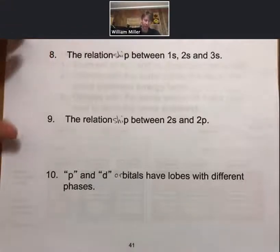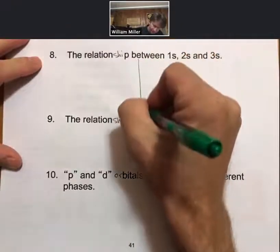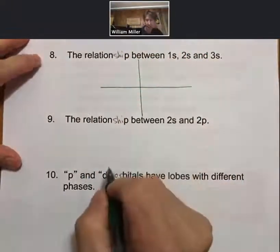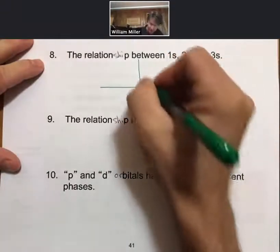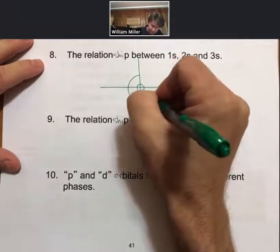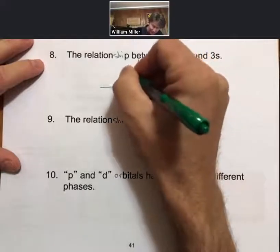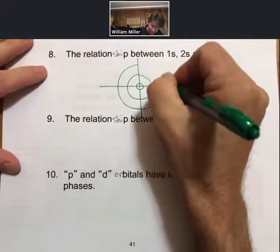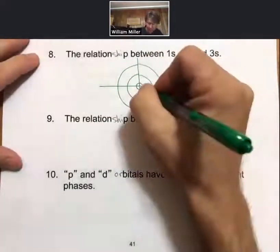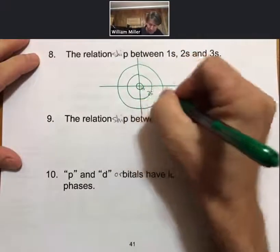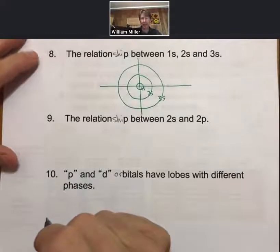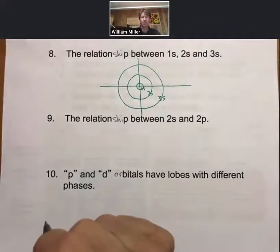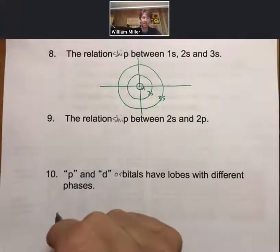So if we were to draw them on a set of axes, of course 1s would be the smallest, then 2s and 3s. Again, not necessarily drawn to scale but doing our best.